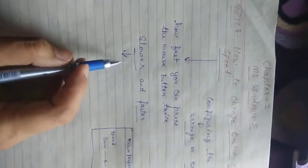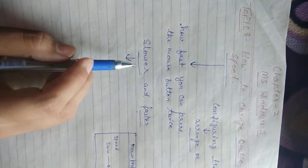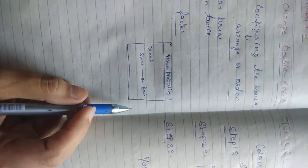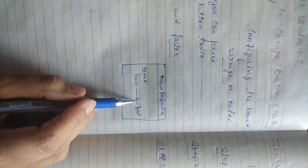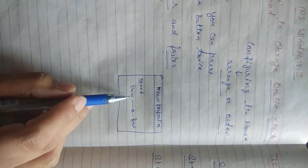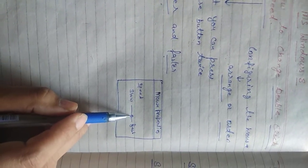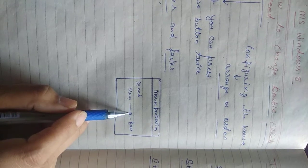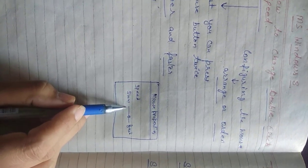If you want to change the double click speed as slower, then click the pointer and move it towards the slow end. This will cause your programs to open at larger intervals when double clicking.